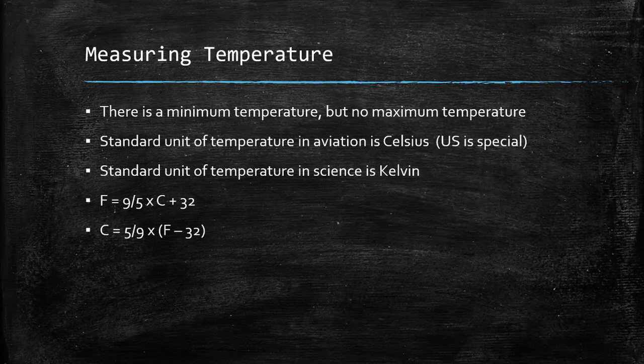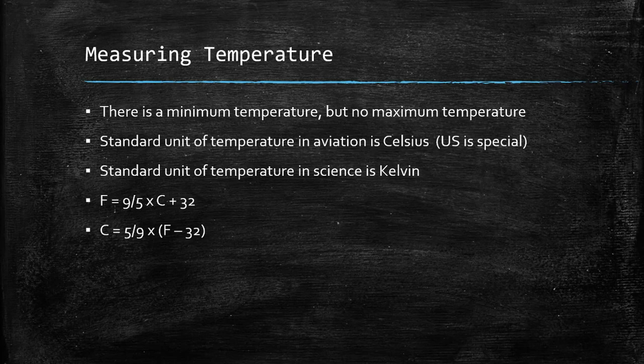It is worth knowing that there is a minimum temperature that any matter can reach. This is the temperature at which it has no energy and is known as absolute zero. However, there is no theoretical maximum temperature matter can reach, though the behaviour of matter gets strained at extremely high temperatures. This is out of scope for meteorology.